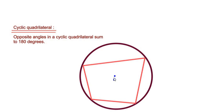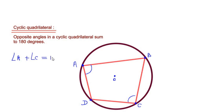I have drawn a circle with center O and a quadrilateral with all four vertices on the circle. Let me label the vertices A, B, C, and D. According to the theorem, opposite angles should add up to 180 degrees. Angle A and angle C are opposite to each other, so angle A plus angle C equals 180 degrees. Similarly, angle B and angle D are opposite to each other, so angle B plus angle D equals 180 degrees. This is the cyclic quadrilateral theorem.